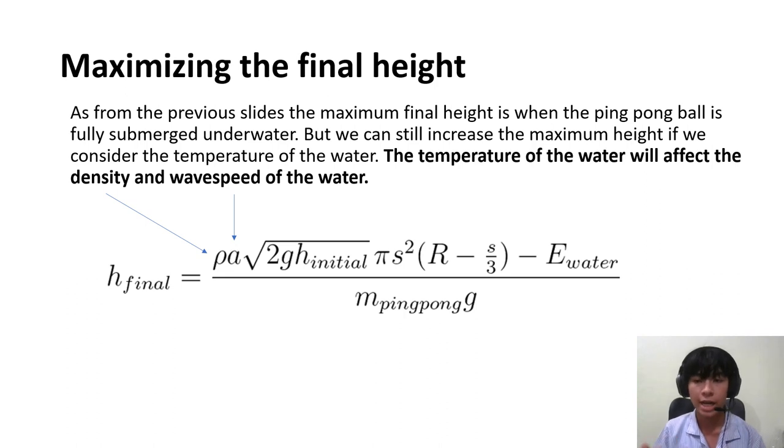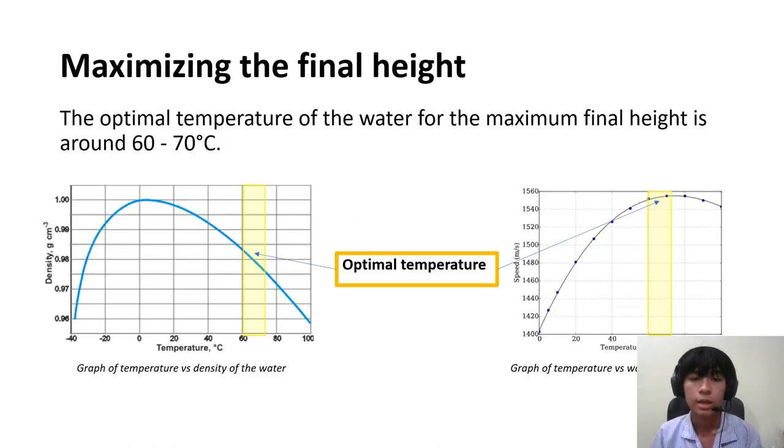To maximize the final height, another parameter we need to consider is the temperature. The temperature of the water will affect the density and the wave speed of the water. The optimal temperature for the maximum height is around 60 to 70 degrees Celsius.